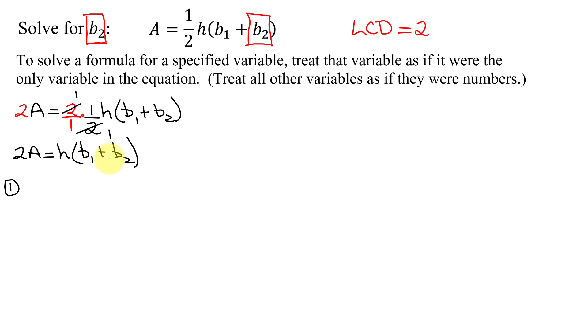h is multiplied by that quantity, so I'm going to have to divide both sides of the equation by h. So I get 2A divided by h equals h over h times the quantity b1 plus b2. The h's reduce on the right-hand side, so I get 2A over h equals b1 plus b2.